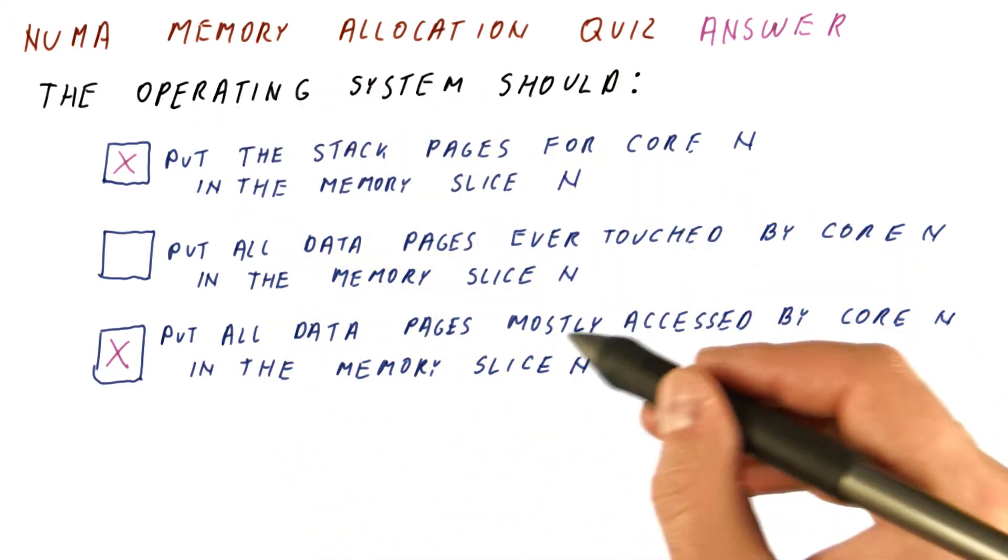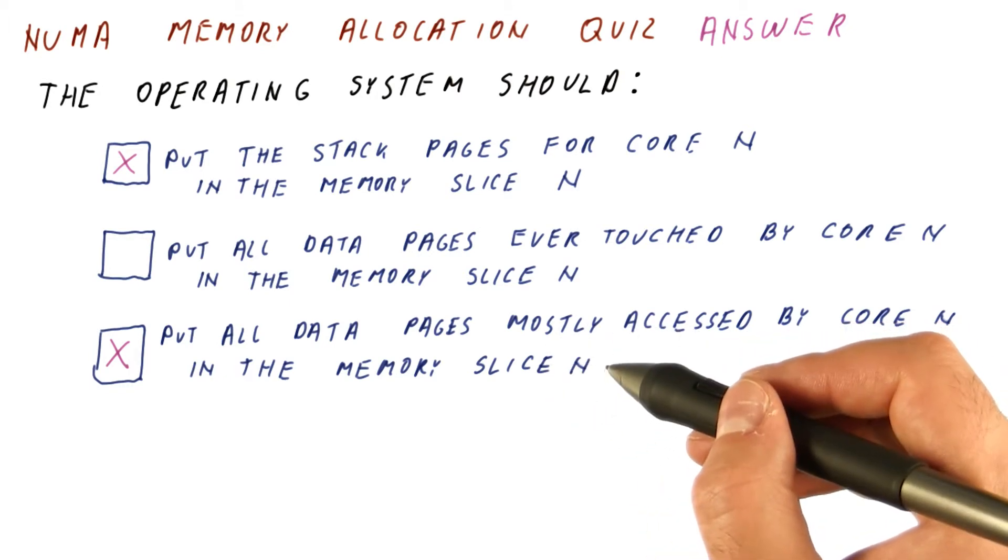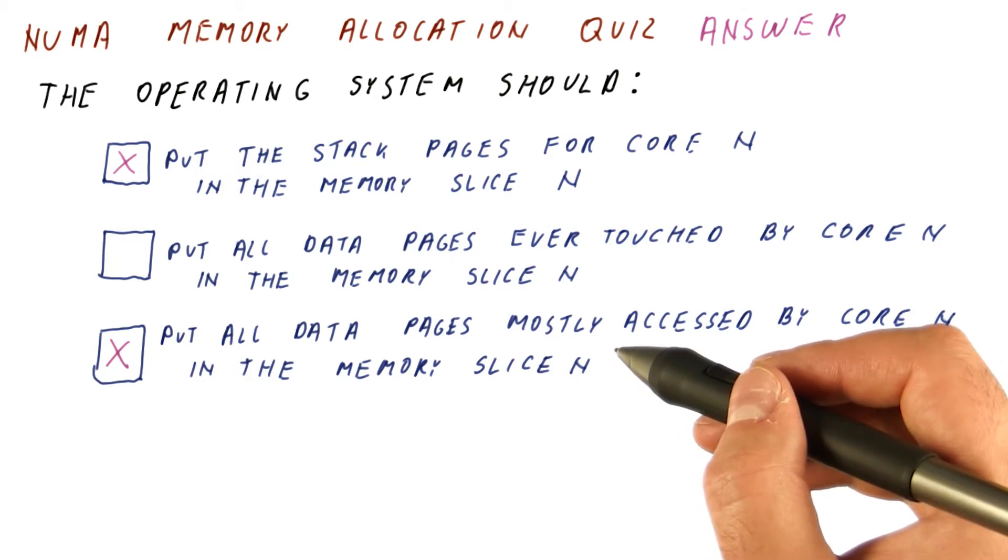So the stack is one of those things that the operating system can figure out very easily where to put. Some of the other pages are a little bit more difficult because more than one core is accessing it, and then the operating system needs to choose a good location, either because one core is accessing it more than others, or to put it in a memory module that is kind of close to all the cores that are accessing it.